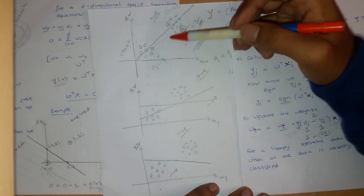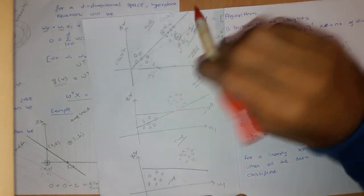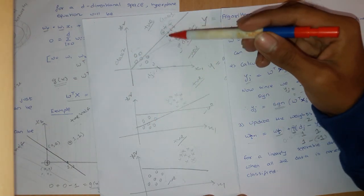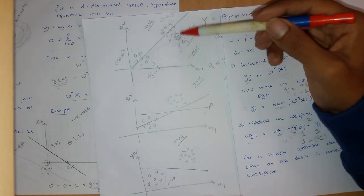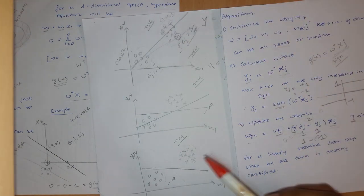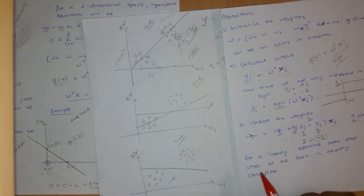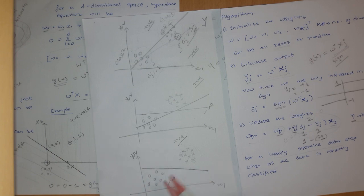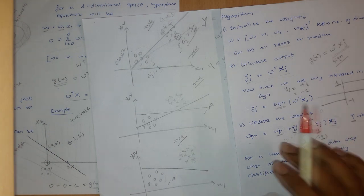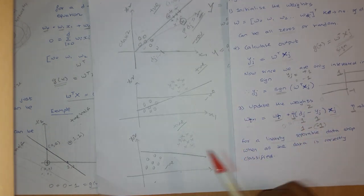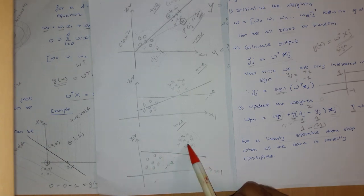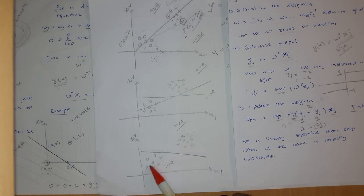We keep iterating over every input and updating the weights whenever a sample is wrongly classified. Finally, we get a line that separates both classes. We stop when all the data is correctly classified. For linearly separable data, the perceptron guarantees that we will always find a line that separates both classes with 100% accuracy.